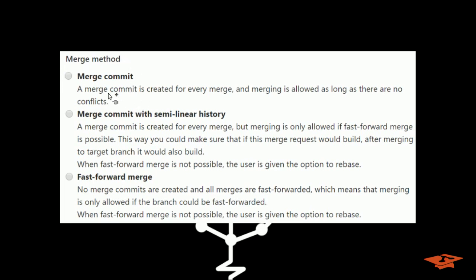This option has the one potential downside that the integration branch, the master in this particular video example, the master branch, can actually break because the CI testing only tests the tip of the source branch, which is possible to actually break the master branch.